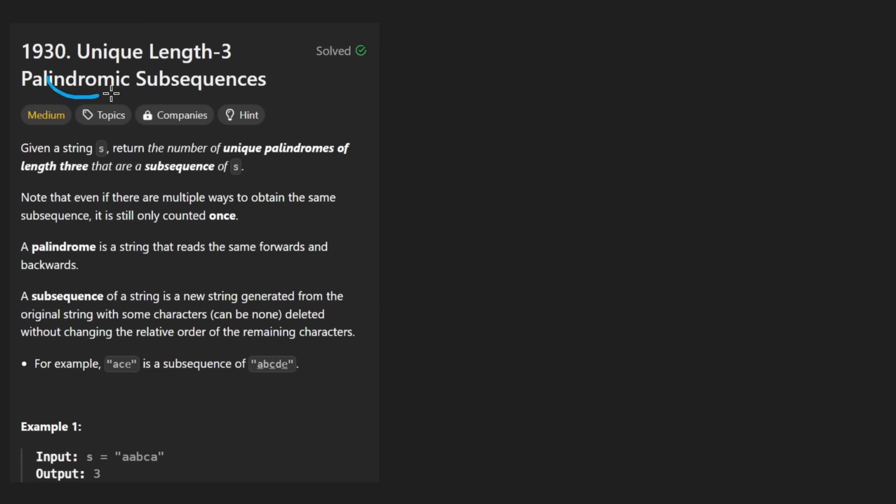But here goes. Unique length three palindromic substring. So the idea is we're given an input string of lowercase a through z characters. So for this input string example, we have a, a, b, c, a.